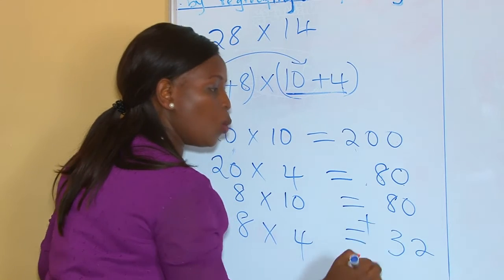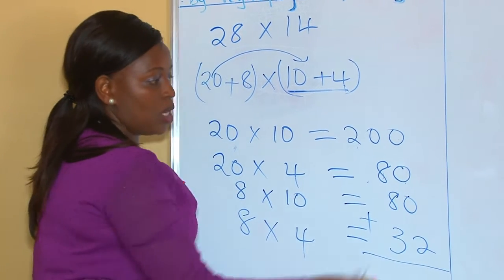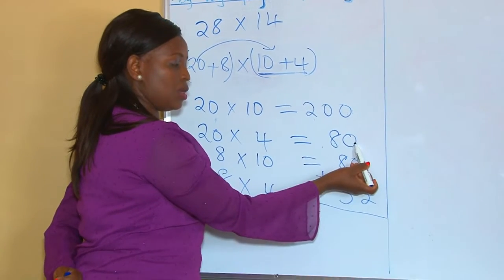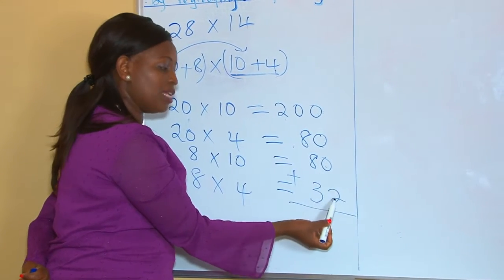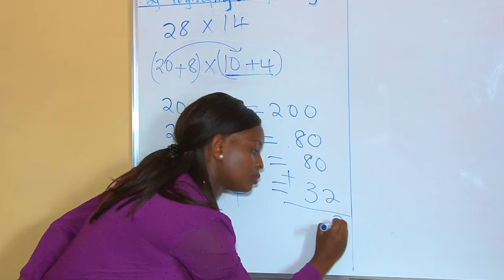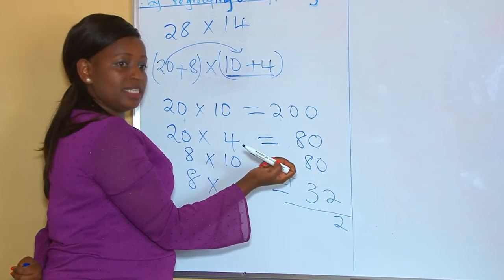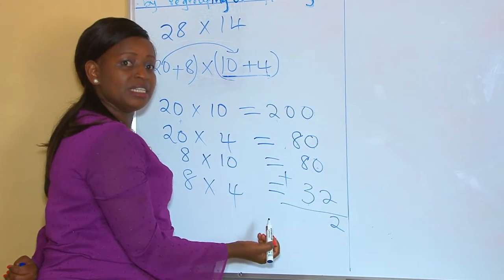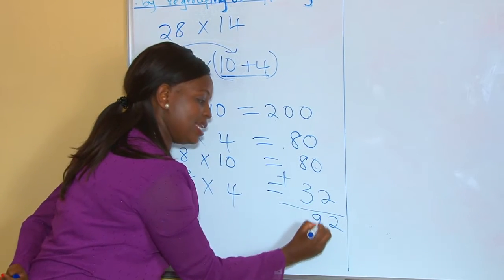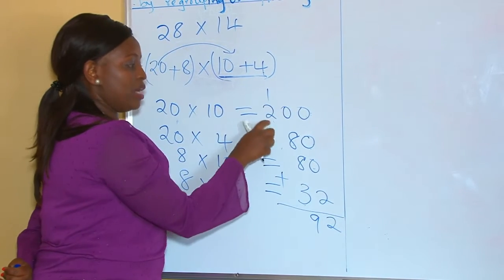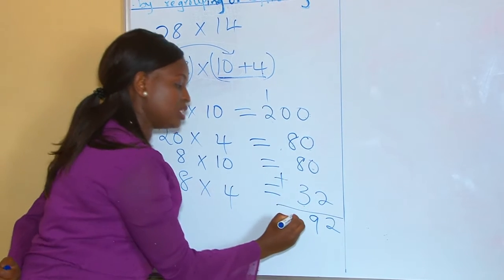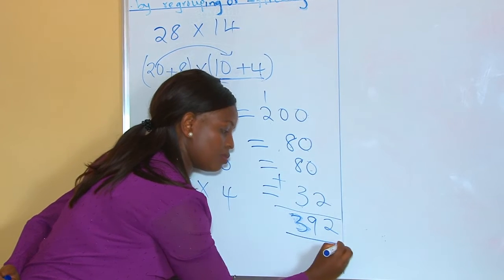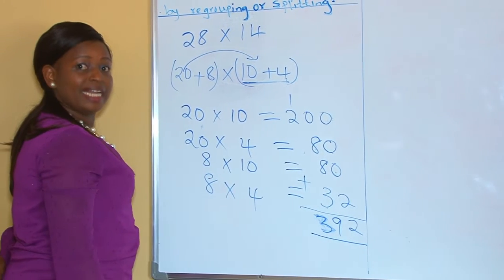After that, we add according to place value. We begin with the 1s: 0 plus 0 is 0, plus 0 is 0, plus 2 is 2. Then the 10s: 0 plus 8 is 8, 8 plus 8 is 16, 16 plus 3 is 19 — so we write 9 and carry 1. Then 1 plus 2 is 3, and nothing else to add, so we record our 3. Our answer is 392.